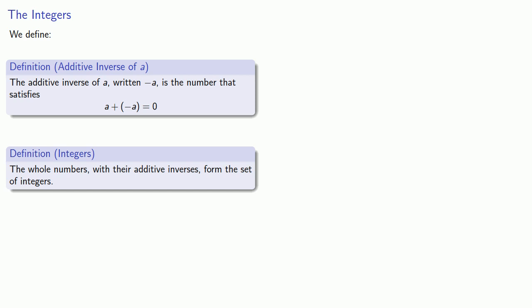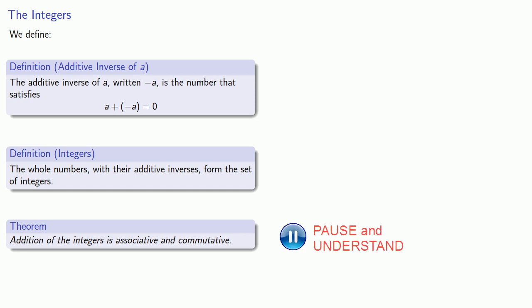Less important but extremely useful is the following theorem. Addition of the integers is both associative and commutative. Remember the importance of that is that any addition can be rearranged in any order that we want.